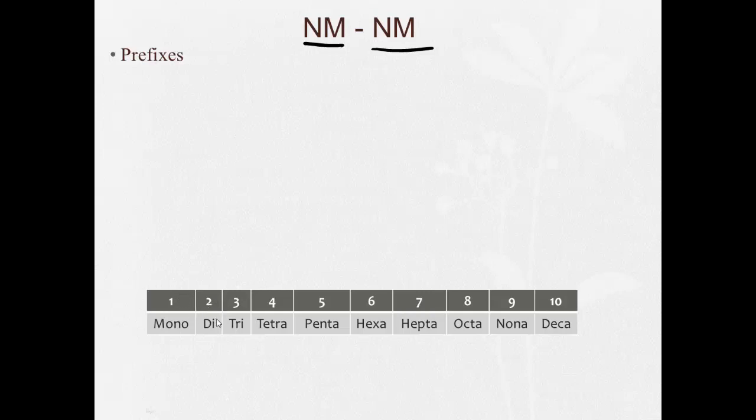One is mono. Two is di. Three is tri. Four is tetra. Five is penta. Six is hexa. Seven is hepta. Eight is octa. Nine is nona. Ten is deca.